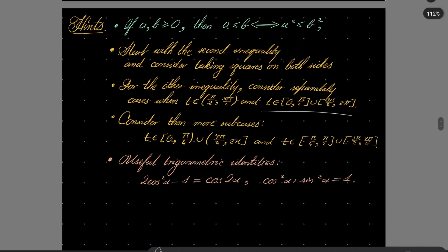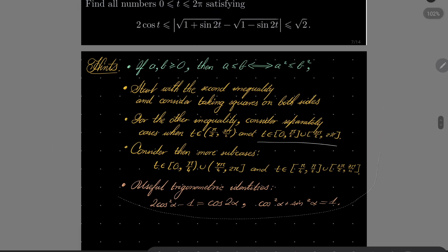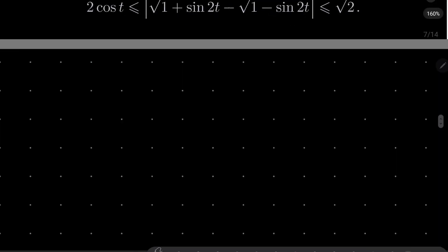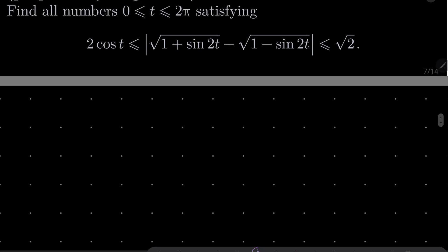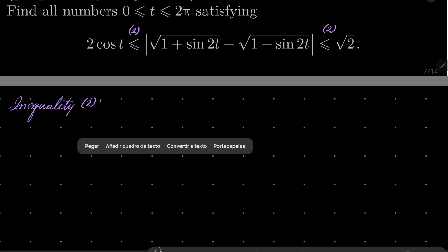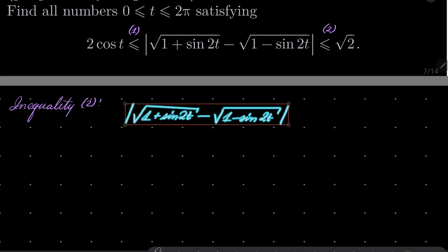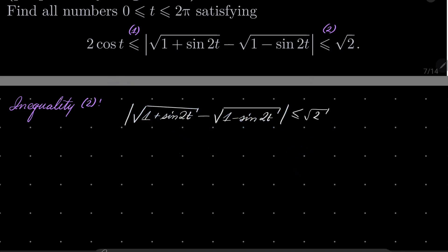So I'll give this problem a try. Let's enumerate our inequalities — inequality number 1 and inequality number 2. Let's start with inequality number 2; it's easier, as a warm-up. We have this inequality, and since both sides are non-negative, we can safely take both sides to the second power.